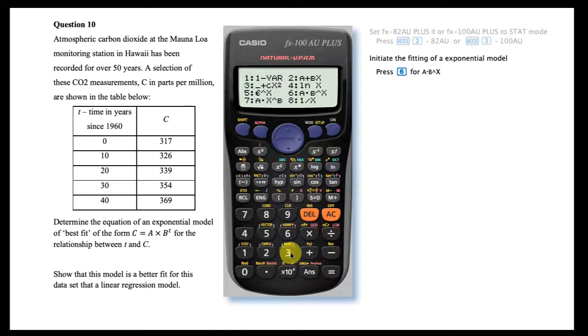A range of regression models for bivariate data are available. For an exponential regression model of the form a times b to the power of x, select option 6.